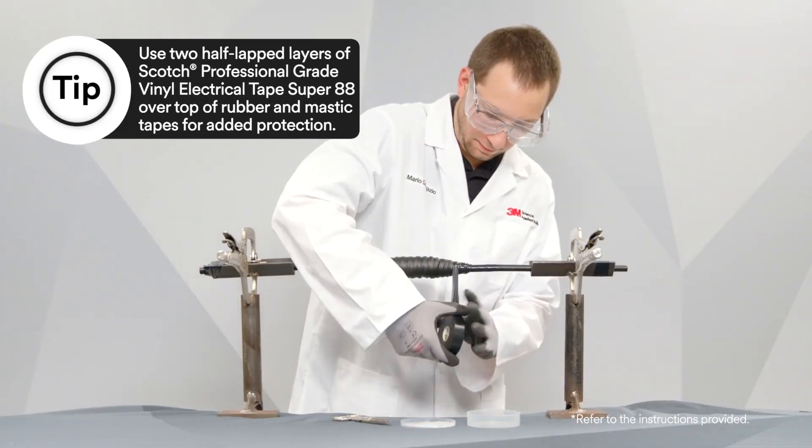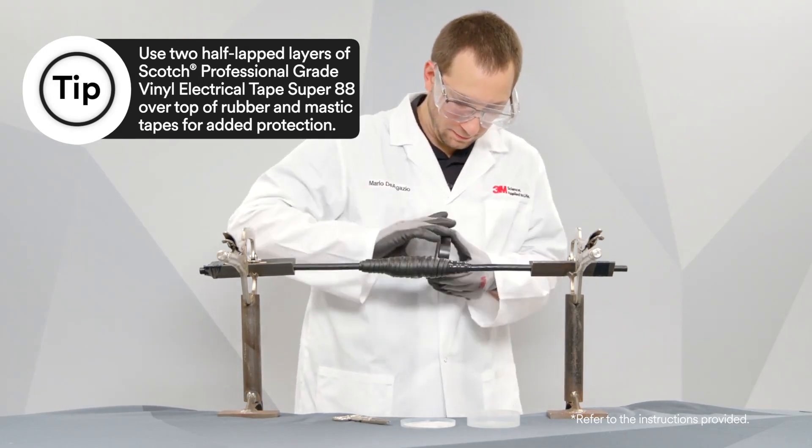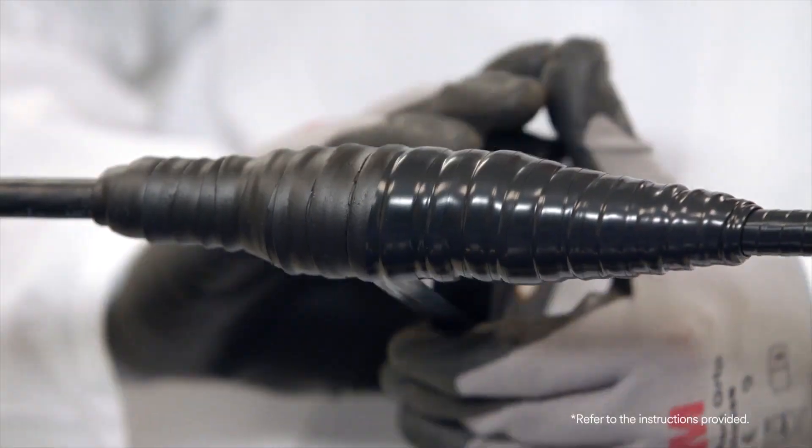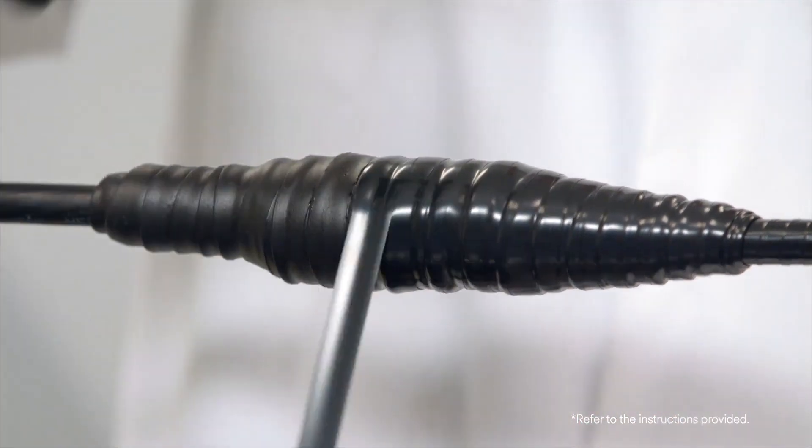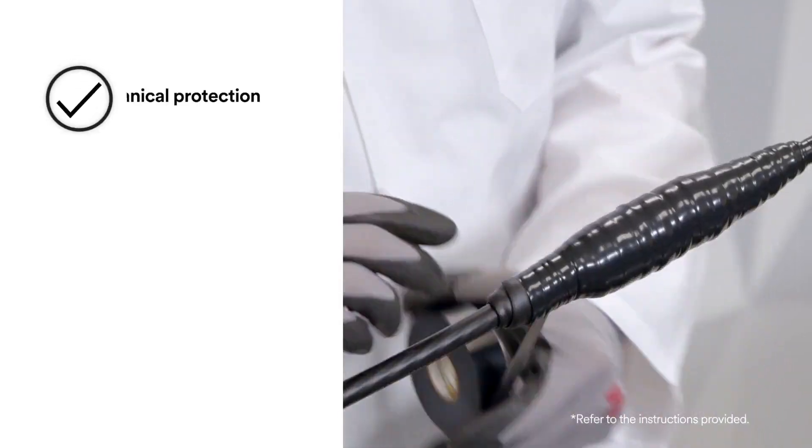One example is to use a minimum of two highly stretched, half-lapped layers of Scotch professional grade electrical tape Super 88 over top of mastic or rubber tapes to help provide extra mechanical protection, UV resistance, and to help create a better seal.